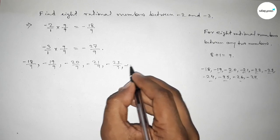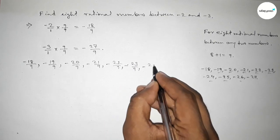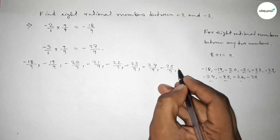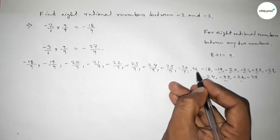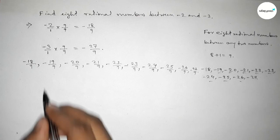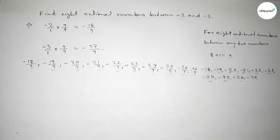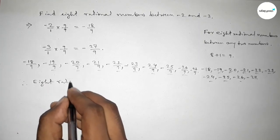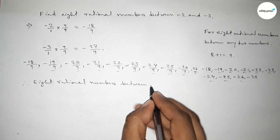Continuing up to minus 27 over 9. First we write down all the rational numbers, and among these, the required eight rational numbers are this one, this one, and this one — between minus two and minus three.